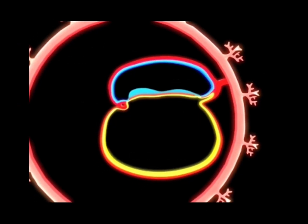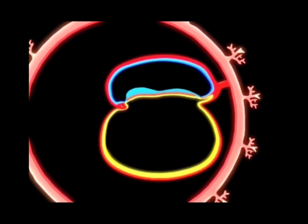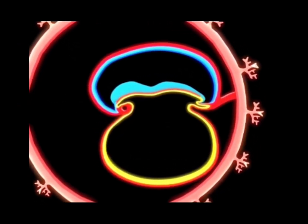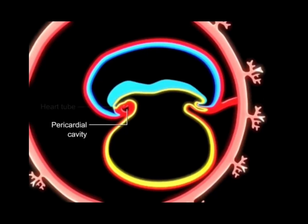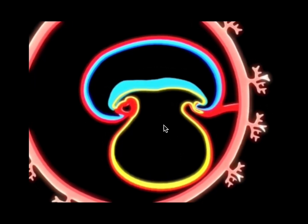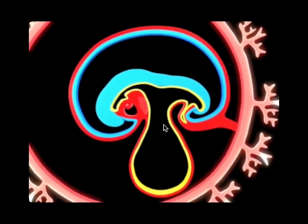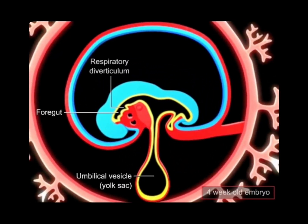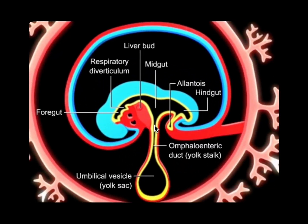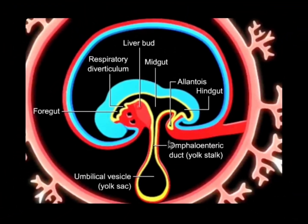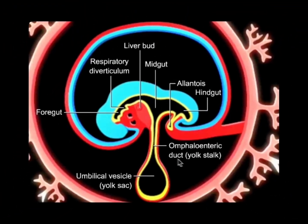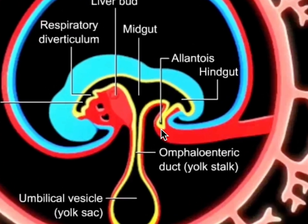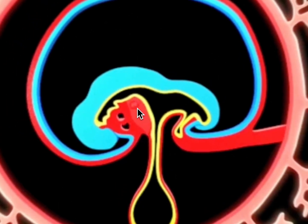Embryonic folding is exactly what will establish the foregut, the hindgut, and the midgut, which are in communication with the umbilical vesicle or the yolk sac. By the end of week four, this communication pinches and narrows as the omphalomesenteric duct, or the vitelline duct, in the midgut. Notice how the allantois and the hepatic, or liver, bud also arise after folding.